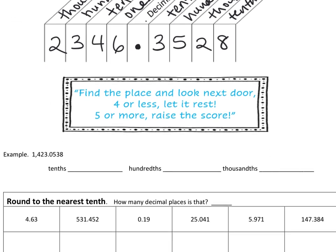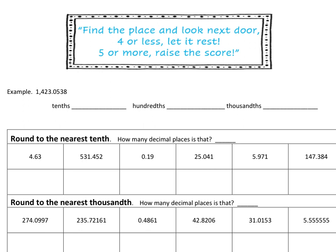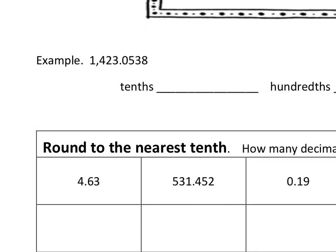That's all we're going to do with this worksheet — just practice rounding. For our example, 1,423.0538, we're going to round to the tenths, which means keeping one decimal place. We look next door at the digit after the tenths place. Is that five or more? Yes. So we raise the score. This would be 1,423.1 — we raise the score from zero to one.